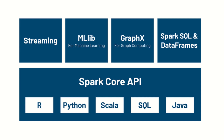We also have the Spark Core API, which is the heart of Apache Spark. It gives you the tools to work with big data across many computers. You can think of the Spark Core API as the base of a building — all other parts like Spark SQL, MLlib, and Streaming sit on top of it. With the Spark Core API, we can load data, transform data, distribute data, and recover from errors automatically.